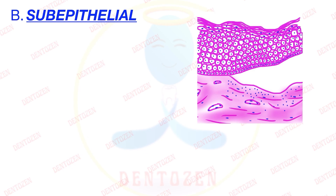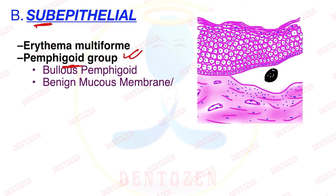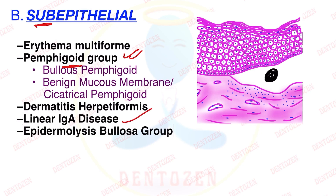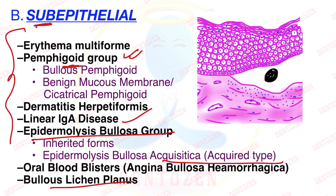Now for the second category — subepithelial lesions, where the blister forms below the epithelium. Examples include erythema multiforme and pemphigoid. Note that intraepithelial has pemphigus, while subepithelial has pemphigoid. Pemphigoid types include bullous pemphigoid and mucous membrane or cicatricial pemphigoid. Other subepithelial conditions are dermatitis herpetiformis, linear IgA disease, epidermolysis bullosa (inherited or acquired), oral blood blisters or angina bullosa hemorrhagica, and bullous lichen planus.